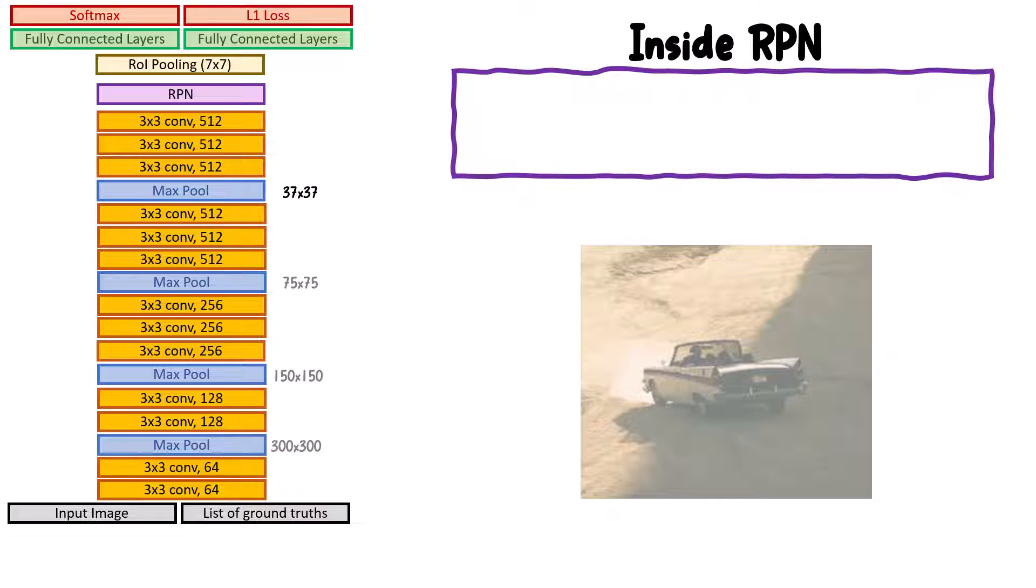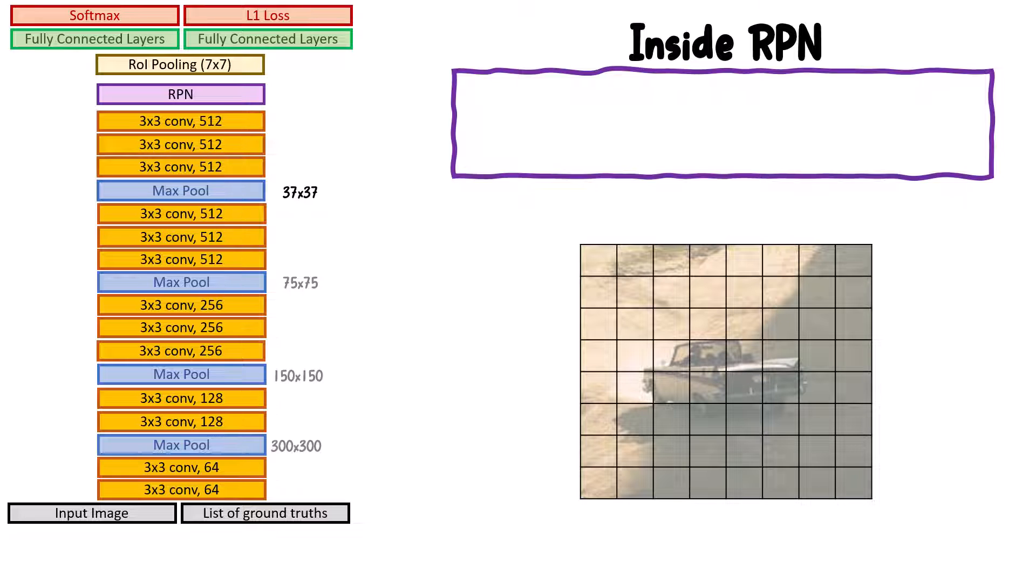This means that it's like we just separated our input image into a 37 by 37 grid structure. But for the sake of demonstration, let's say the grid size is 8 by 8.